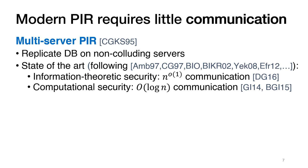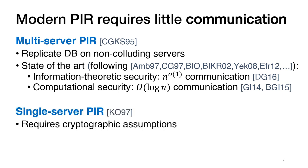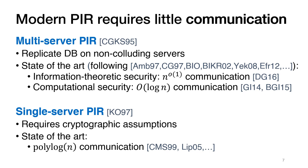Ever since, there has been a long line of work improving the communication complexity of multi-server PIR. Today, the best PIR protocols have communication complexity n to the little-o of 1, and they provide information theoretic security. Moreover, if we settle on computational security, recent protocols achieve logarithmic communication just from one-way functions. In addition, Kushilevitz and Ostrovsky showed that one can build PIR with only a single server, but here computational assumptions are necessary. Today, we know how to build PIR with polylogarithmic communication complexity in the single server setting from a wide range of public key assumptions.